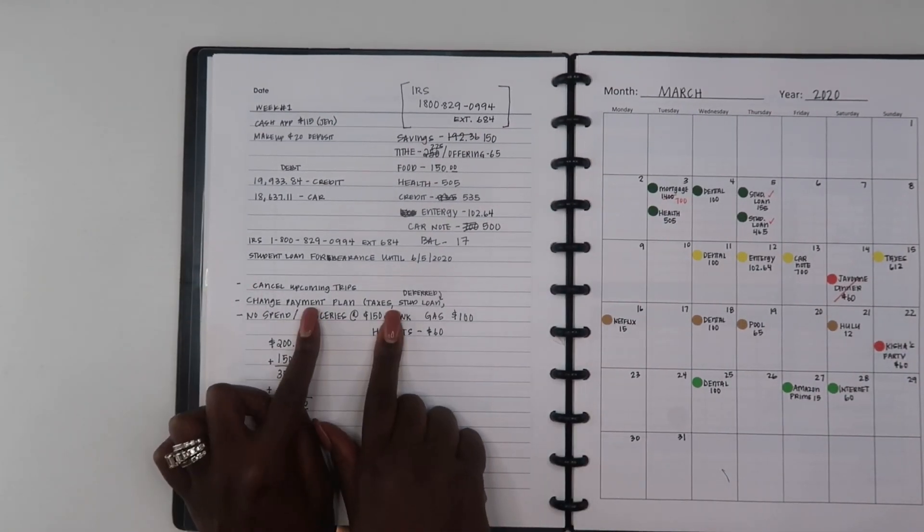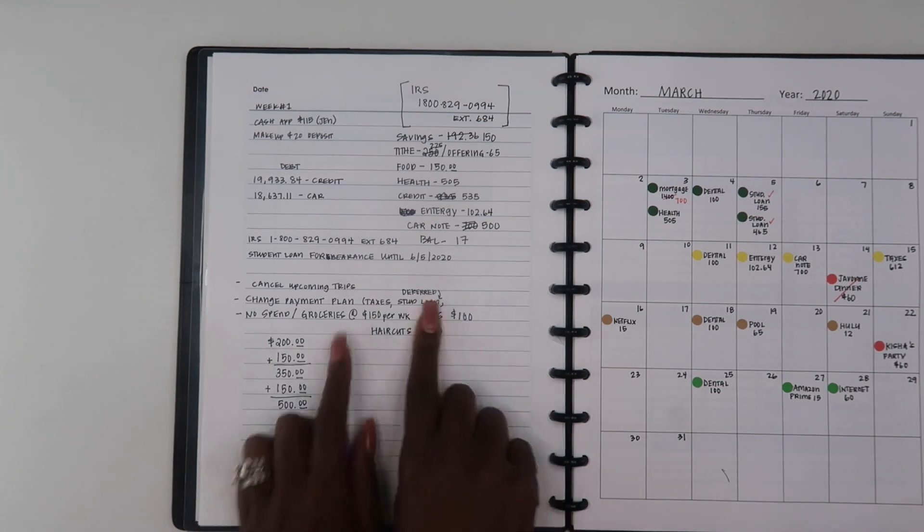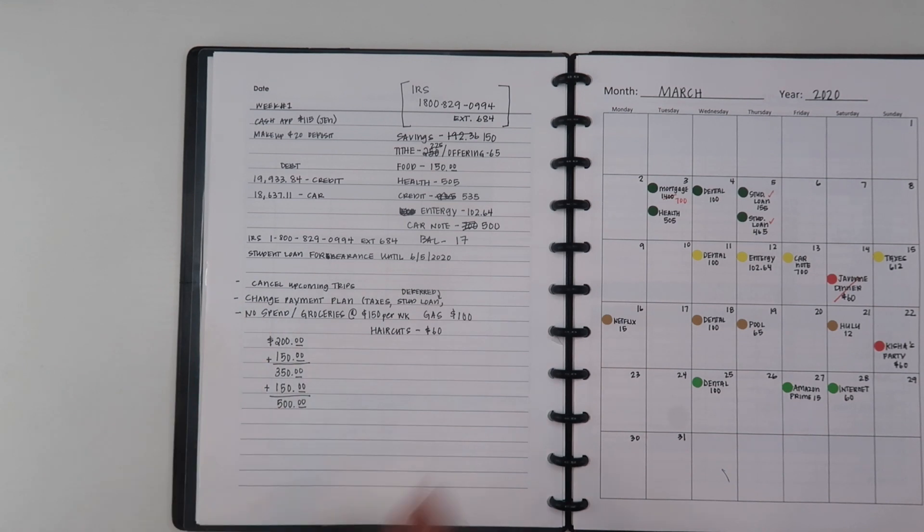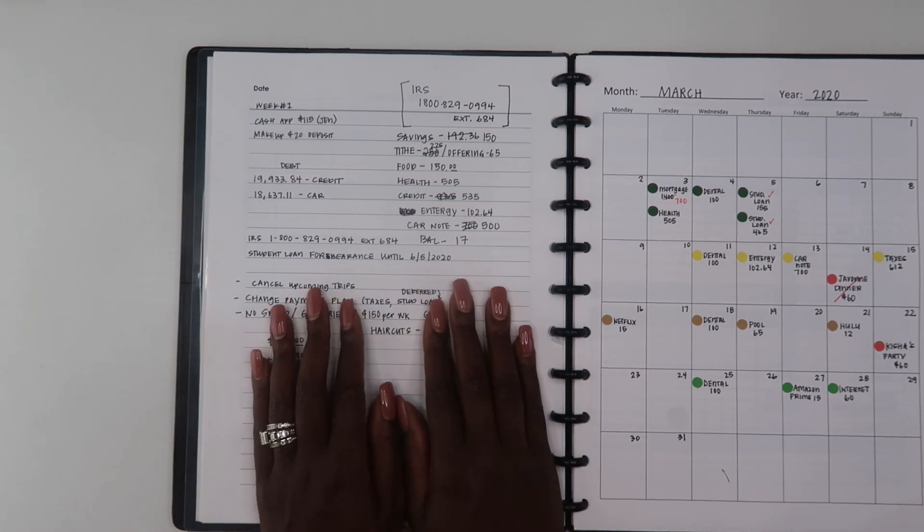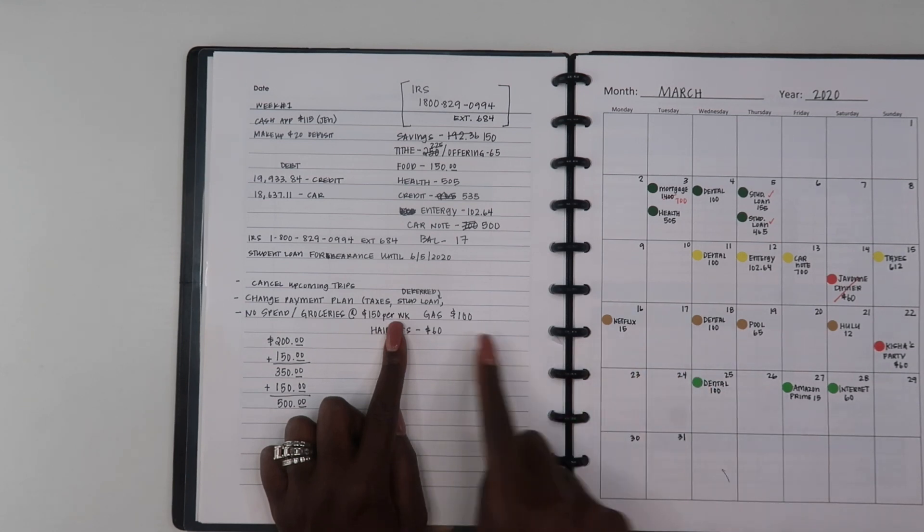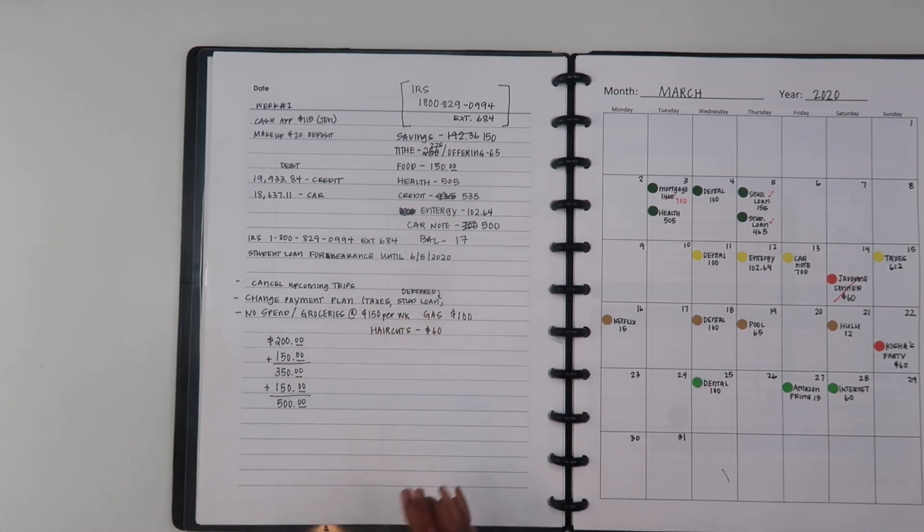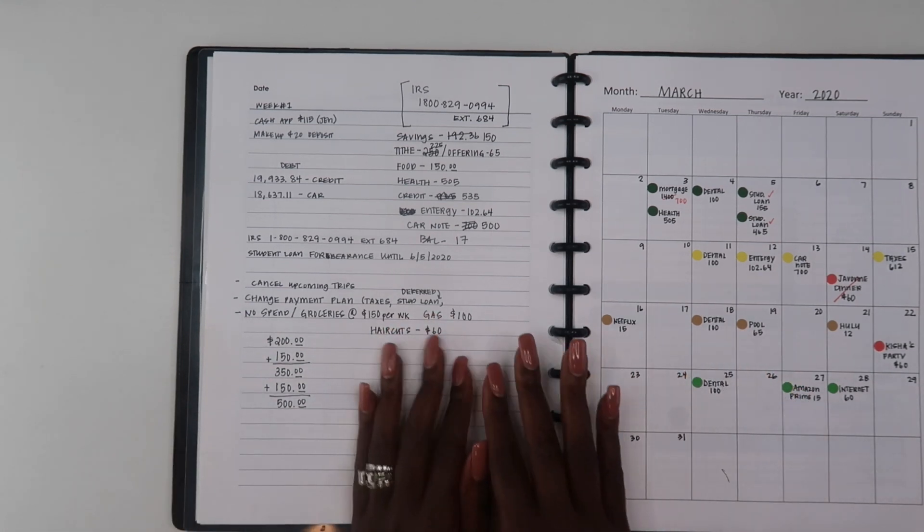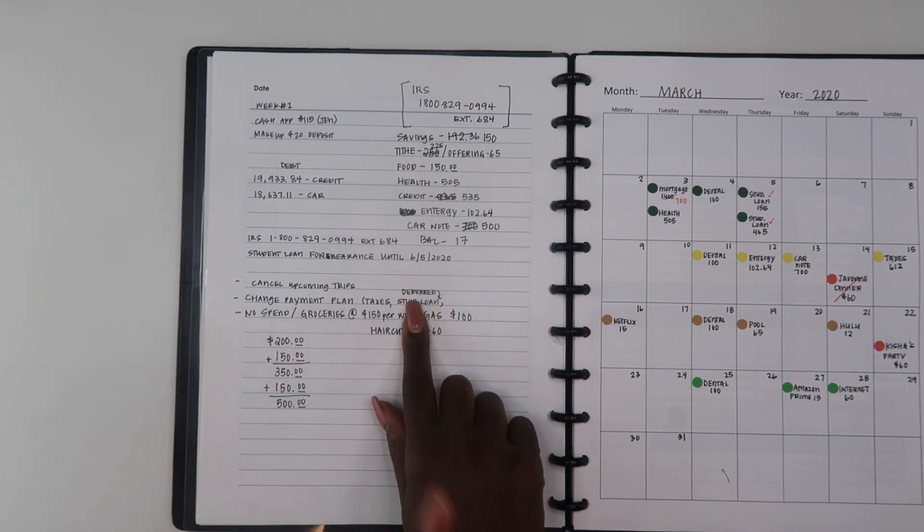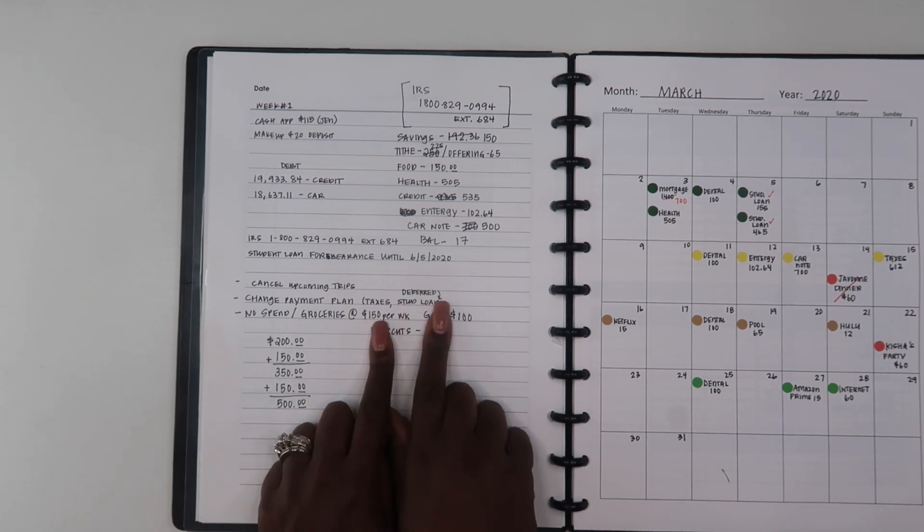The second thing that I did was I called to defer my student loans, which if you have student loans they do have an option right now. It's actually a button on the site when you first log into your student loans that if you need to defer or do any type of forbearance because of the pandemic you definitely can do that.